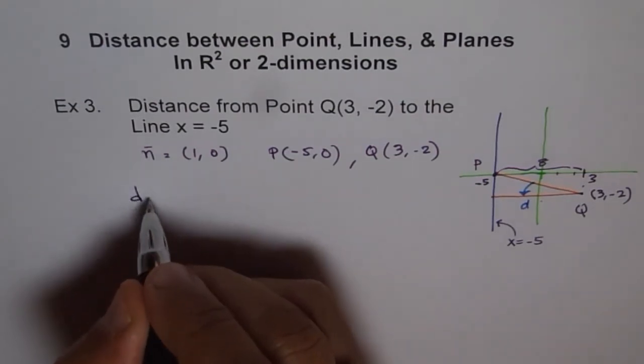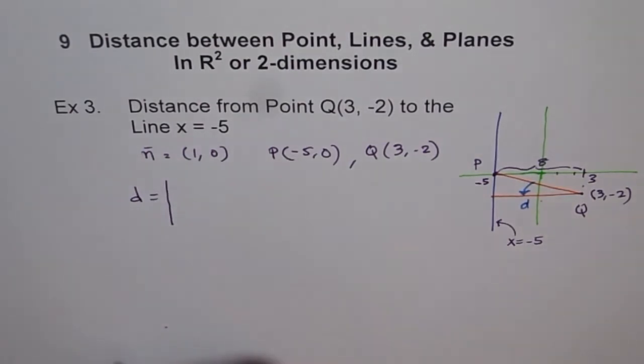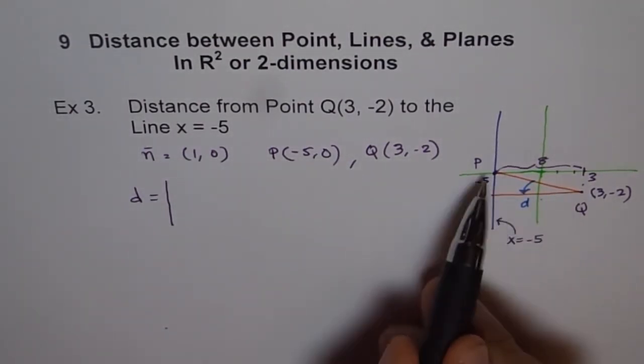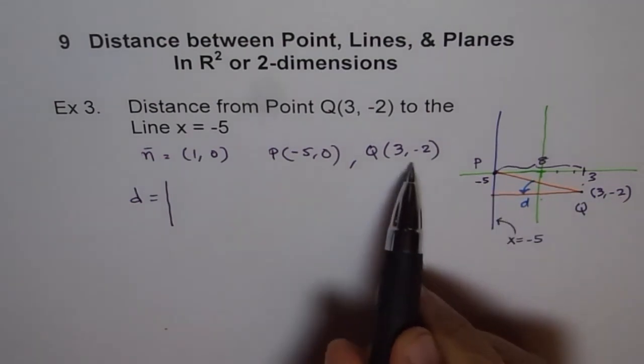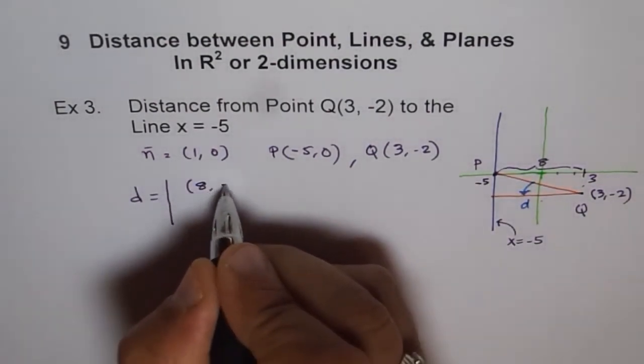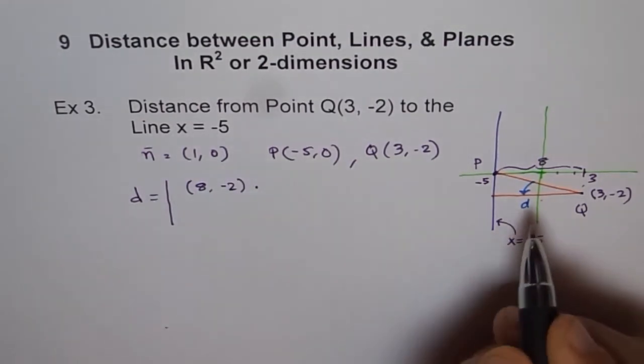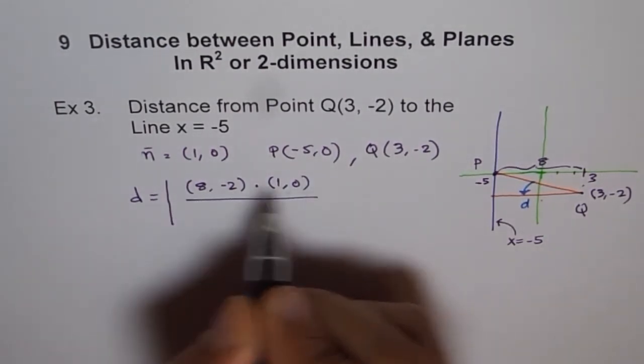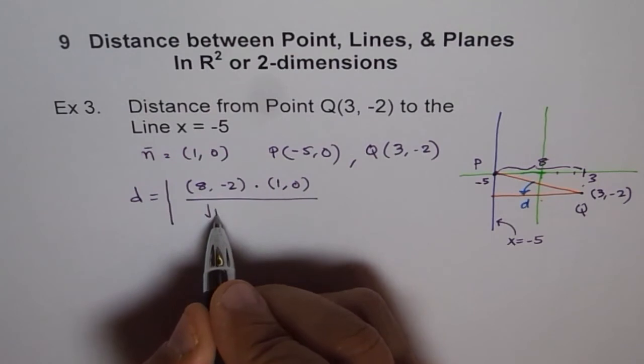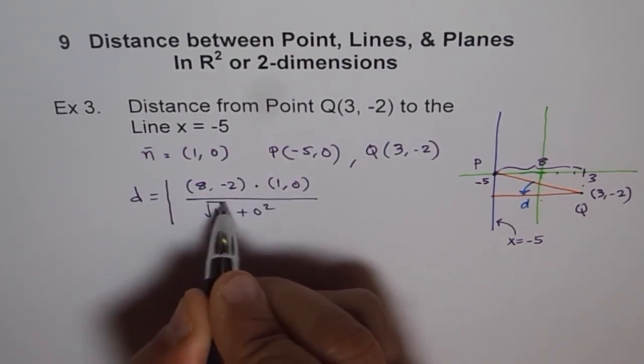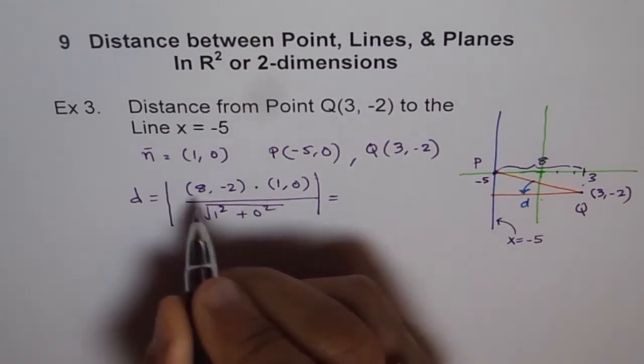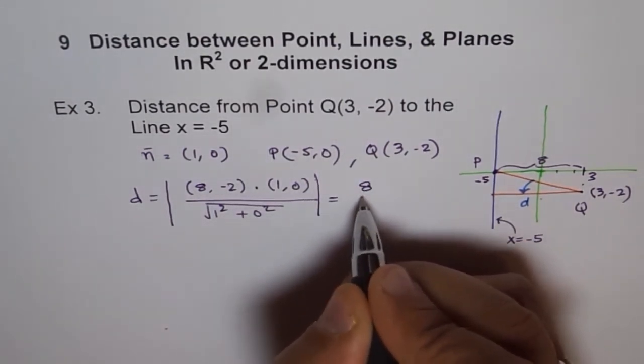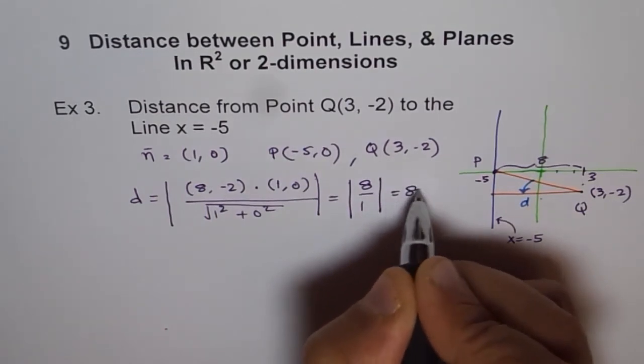So distance for me is equals to always absolute value. So what is this PQ? PQ is 3 minus 5, take away minus 2, 0. So we'll write that. We'll get 8 and minus 2 dot product with the normal, which is 1, 0 divided by 1 square plus 0 square. That is my normal. Which gives me 8 over 1 absolute value, which is 8.